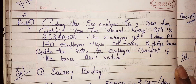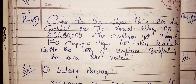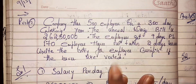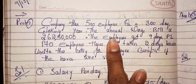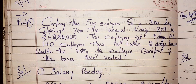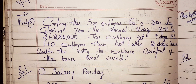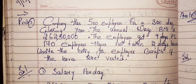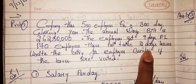Hello everyone, welcome to my YouTube channel. In this video we'll solve a problem related to employee benefit expenses when leaves are vested. The company has 500 employees on a 300 working days year. The annual wage bill is ₹2,62,50,000. Employees get 9 days paid leave.